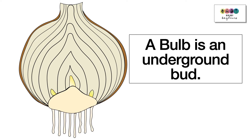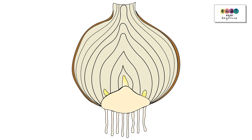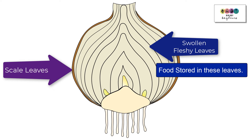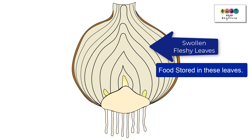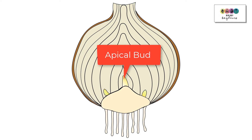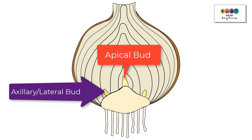Working from the outside in: when you cut an onion there are tough scale leaves — these are either brown or sometimes red if you have a red onion. Inside of this are swollen fleshy leaves — this is where you find the food reserve, so these swollen fleshy leaves are storing the food. Then we have a very much reduced stem and the roots.